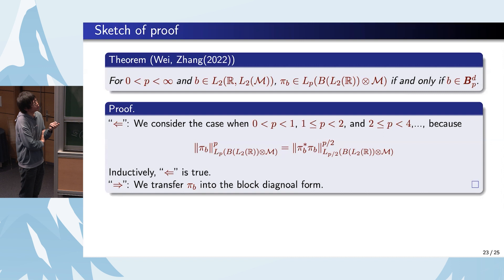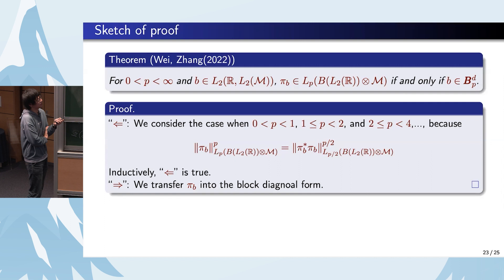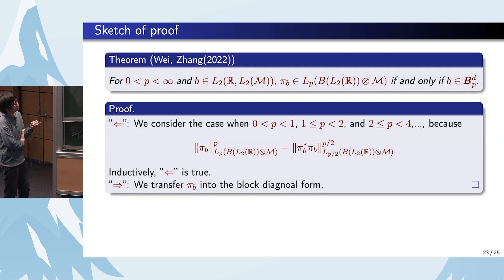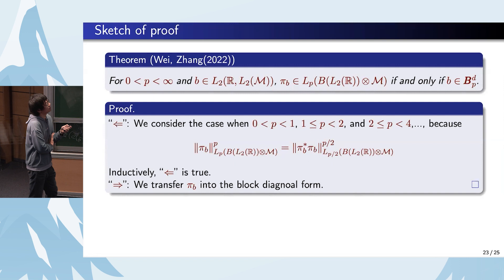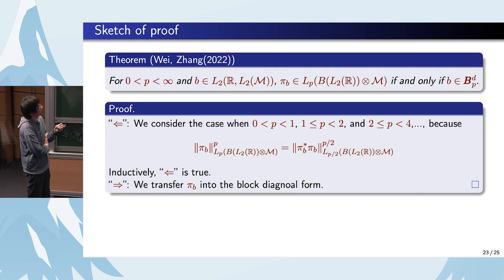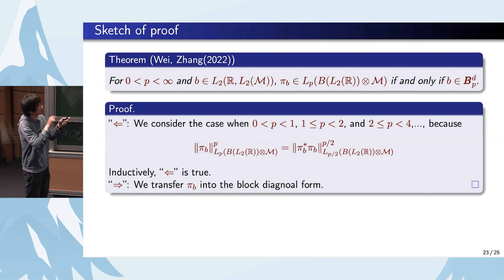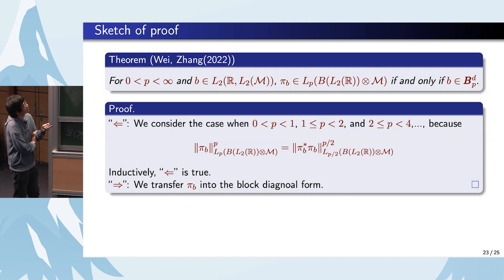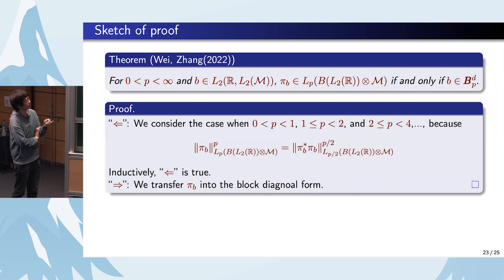For p between 4 and 8, between 8 and 16, and so on, we use the same inductive method. So inductively, the sufficiency of the theorem is established. For the converse direction, the idea is to transfer pi_B into block diagonal form, from which we obtain the converse direction. This is just a very brief sketch of the proof. We have thus proved the theorem: a description of the Schatten class of the paraproduct on the semi-commutative martingale case.